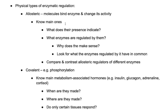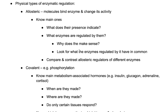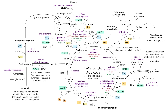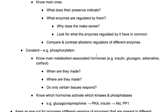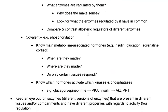Know the main allosteric modulators and what their presence indicates. If you have a lot of ATP, it's telling you you've got a lot of energy; a lot of AMP means you don't have a lot of energy. Think about what's going to be regulated by them and why that makes sense. You'll see that a lot of enzymes are regulated by the same sorts of modulators, but it's kind of a mix and match allowing for combinatorial regulation — some enzymes regulated by the same things but also by different things, so you can regulate them simultaneously but also separately from one another.